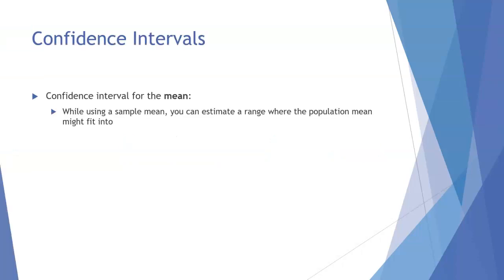Let's talk about confidence intervals. First, we're going to talk about confidence intervals for the mean. When we are making a confidence interval for the mean, what we're doing is using our sample mean to estimate this range of values where the population mean might fit into.